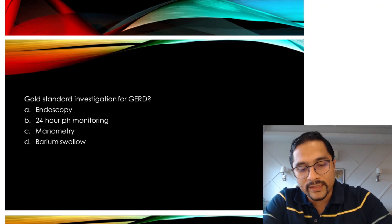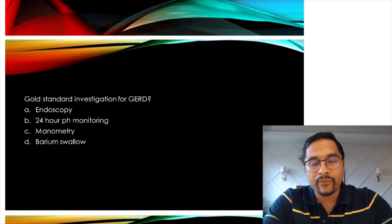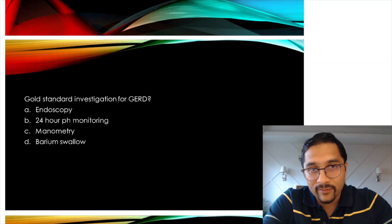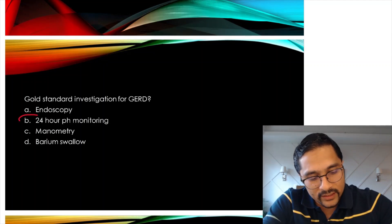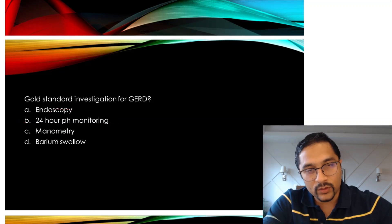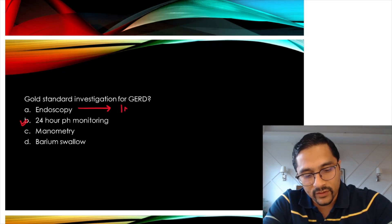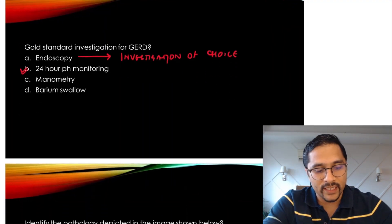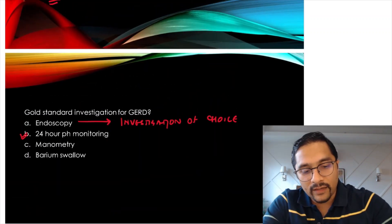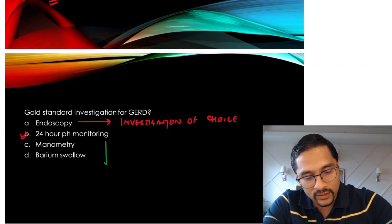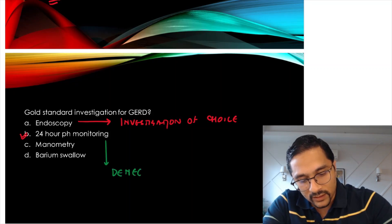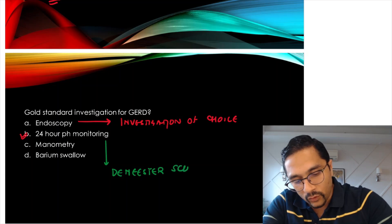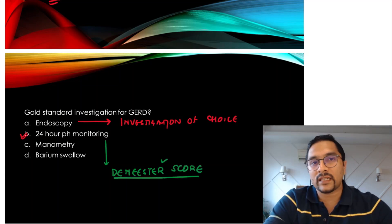The first question was: what is the gold standard investigation for GERD? We know gastroesophageal reflux disease or GERD — the gold standard investigation is 24-hour pH monitoring. The investigation of choice, if they ask you, is endoscopy. So investigation of choice is endoscopy but the gold standard is 24-hour pH monitoring, and when we do 24-hour pH monitoring we measure the DeMeester score to detect whether the patient has GERD.